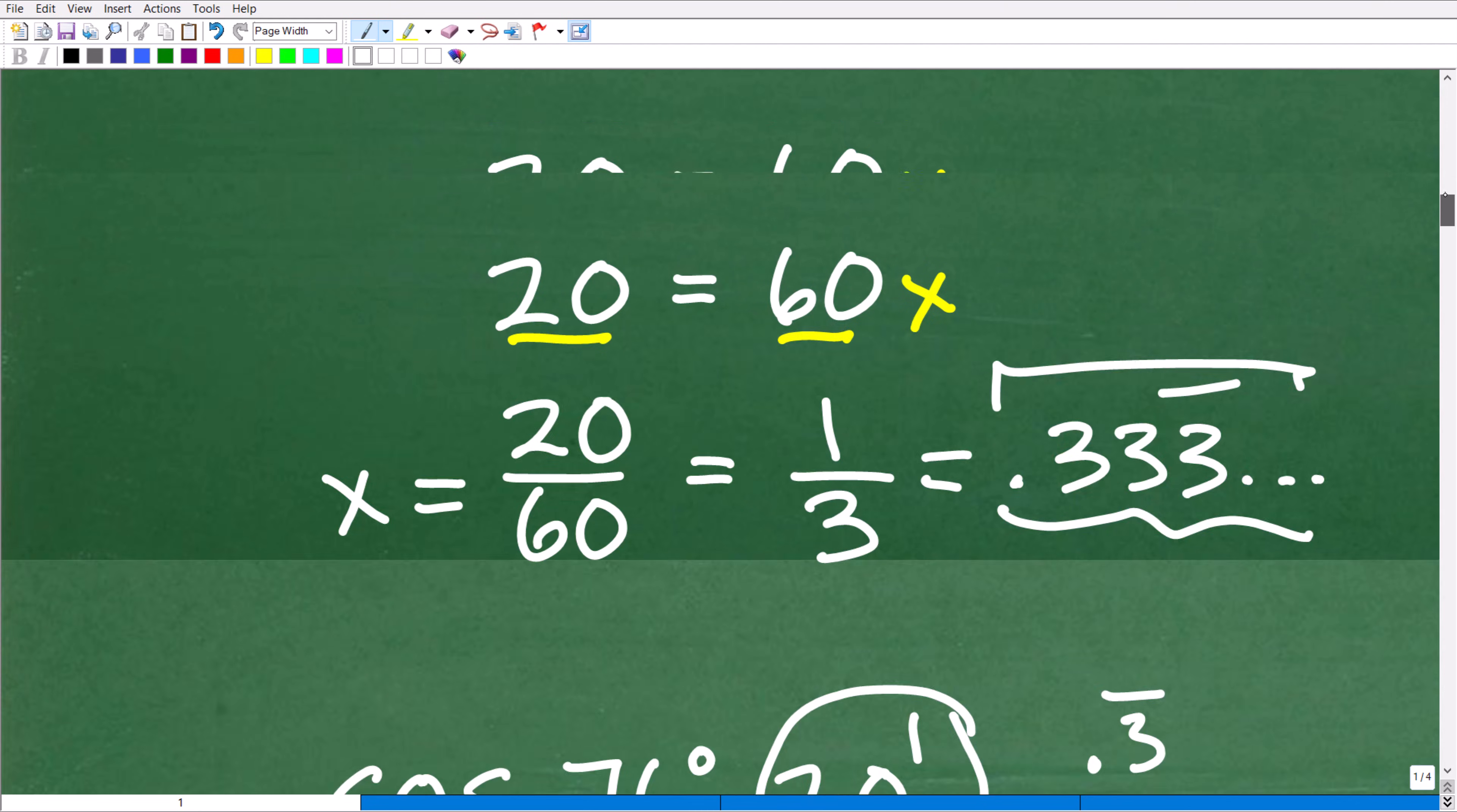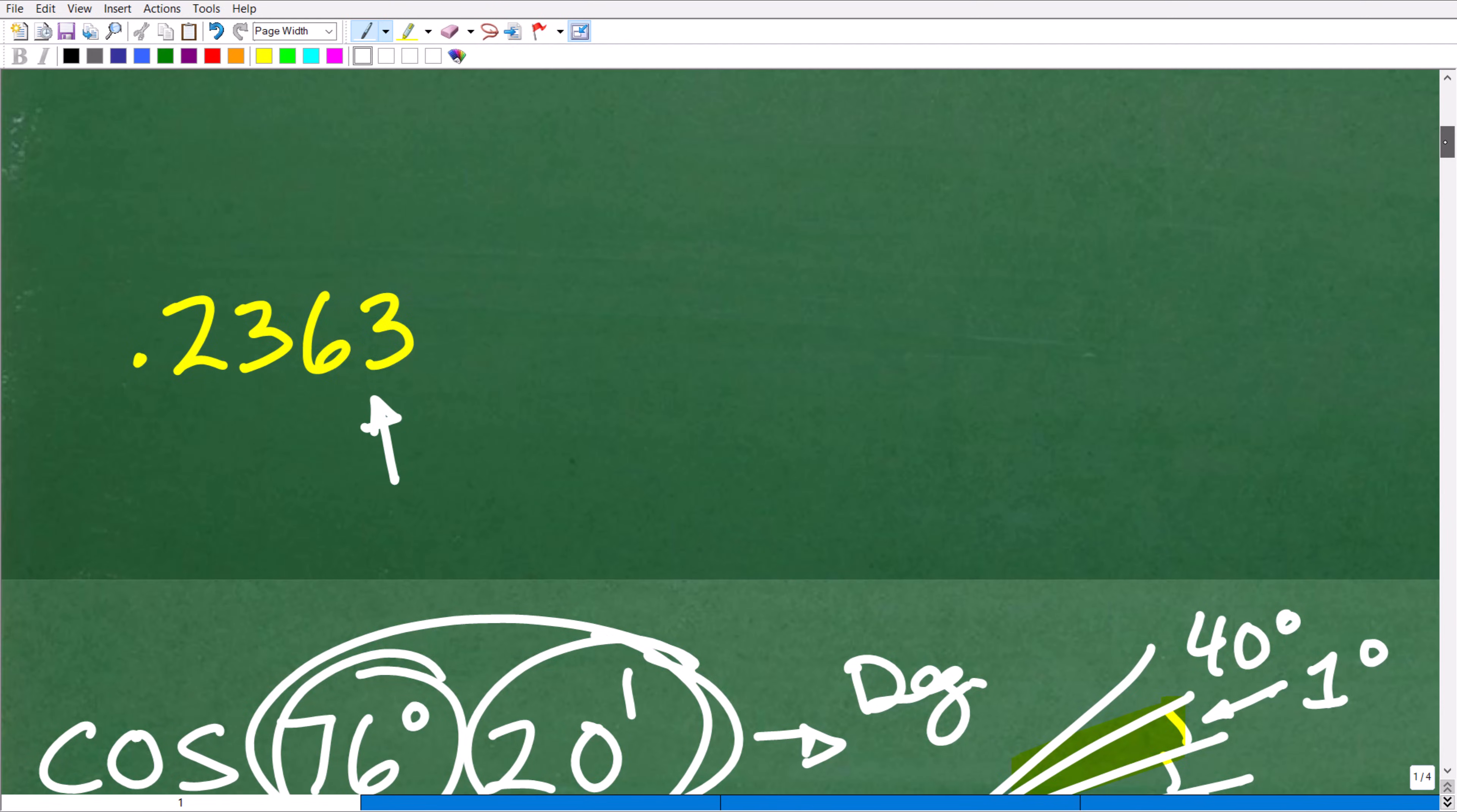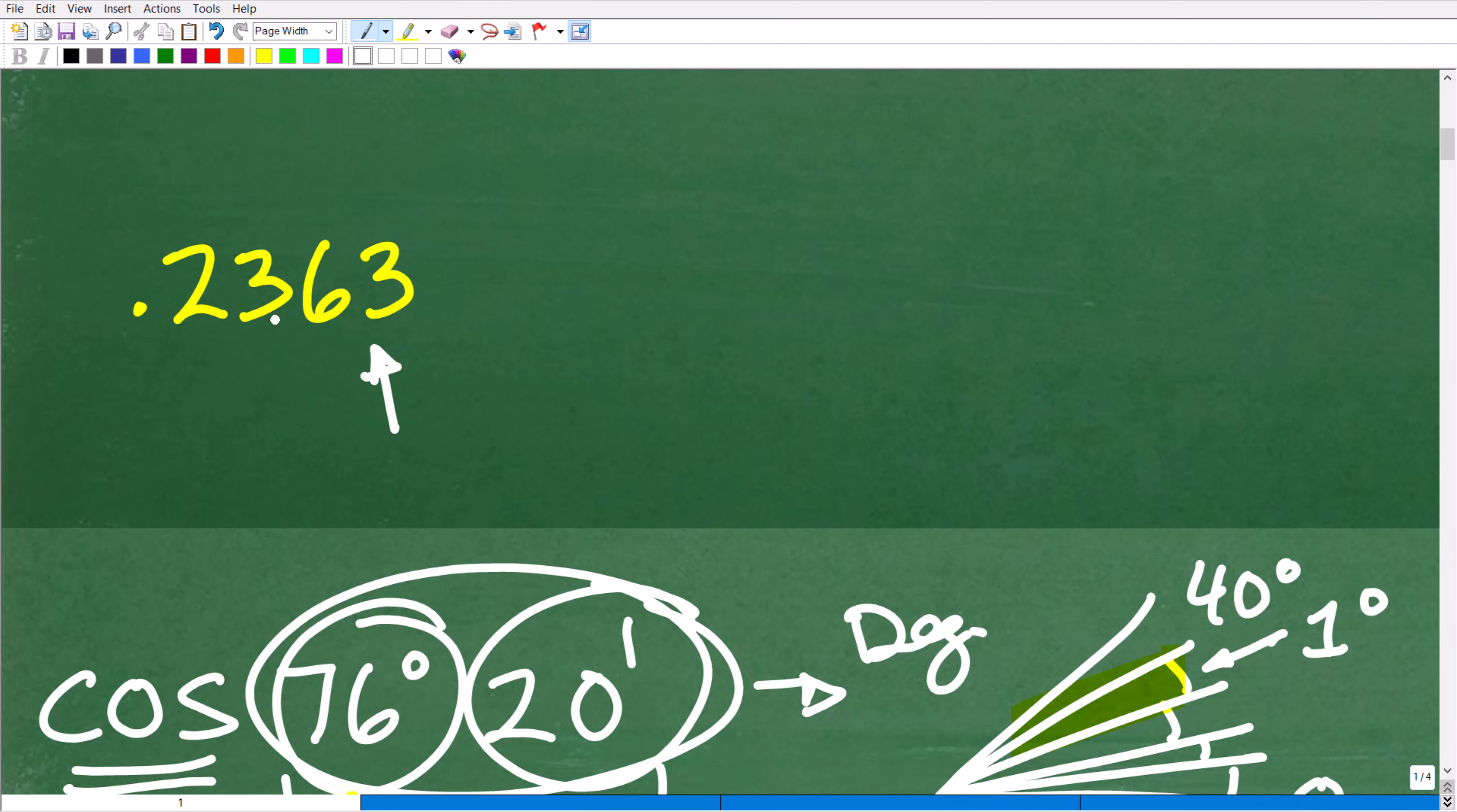Which is going to be 0.236. It depends on how many 3s you put in, like 6, 2. I think it was 7 was that last digit, but if you round it up to 4 digits, you would have 0.2363.